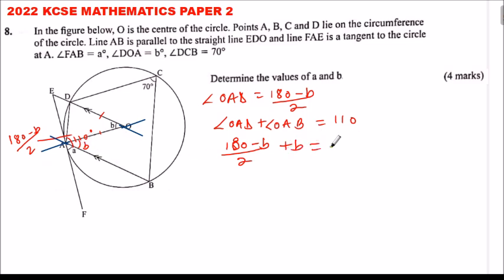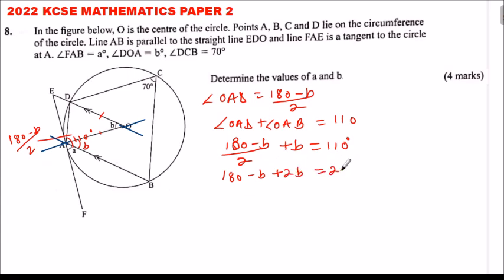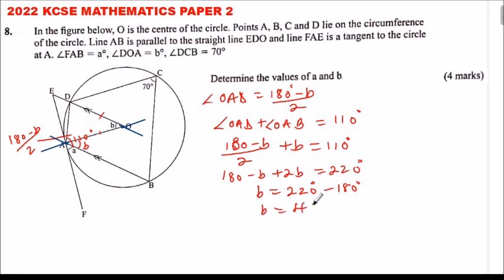Multiplying throughout by 2: 180 minus b plus 2b equals 220. This simplifies to 180 plus b equals 220, so b equals 220 minus 180, giving b equals 40 degrees.